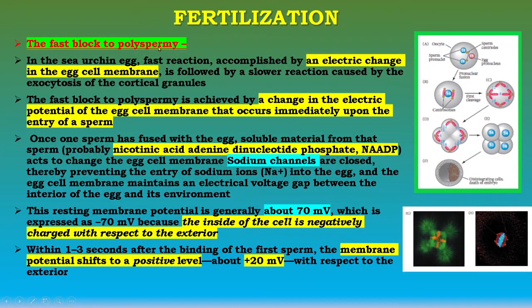In the sea urchin egg, a fast block to polyspermy is accomplished by an electrical change in the egg cell membrane, followed by a slower reaction caused by exocytosis of the cortical granules. The first block to polyspermy is achieved by a change in the electric potential of the egg cell membrane that occurs immediately upon sperm entry. Once one sperm has fused with the egg, soluble material from that sperm — probably nicotinic acid adenine dinucleotide phosphate (NAADP) — acts to close sodium channels, preventing further sodium ion entry into the egg.